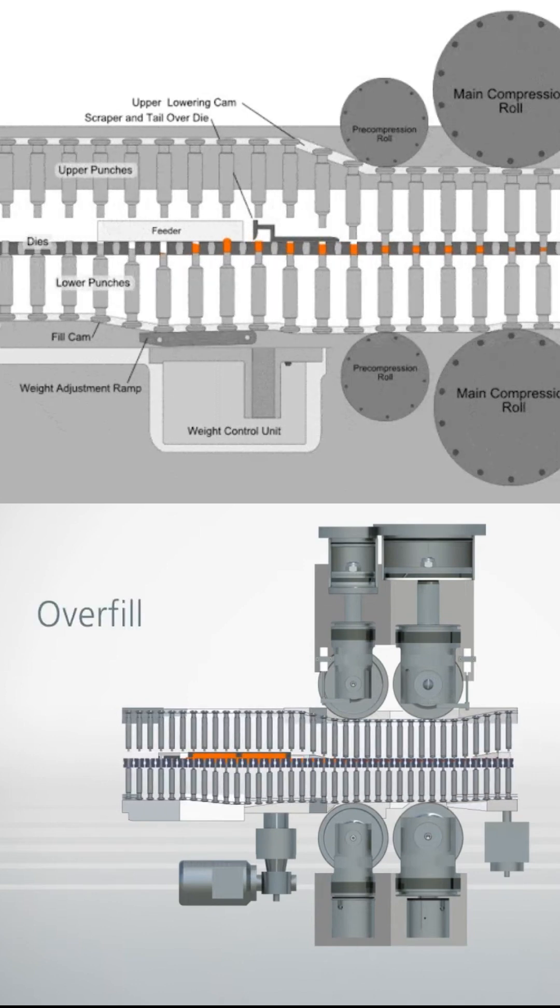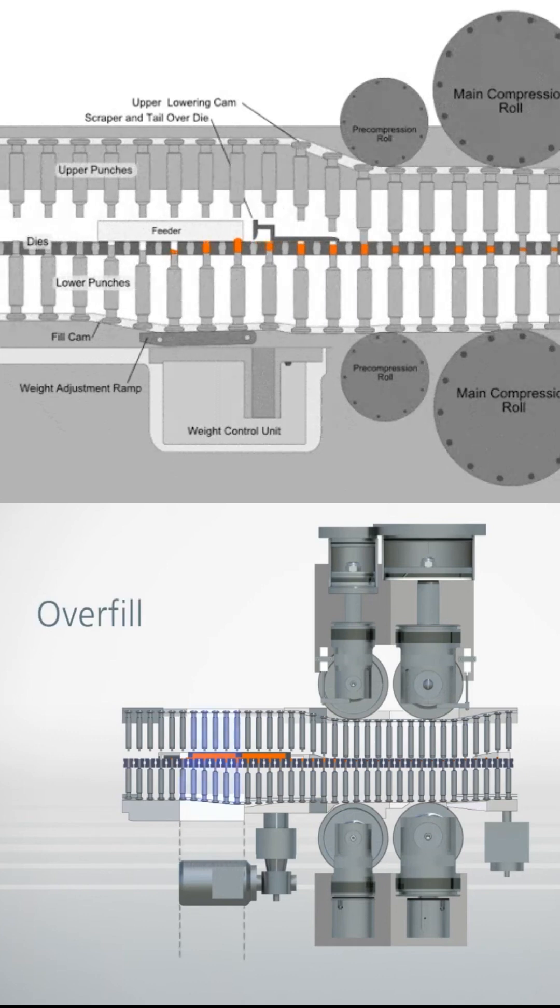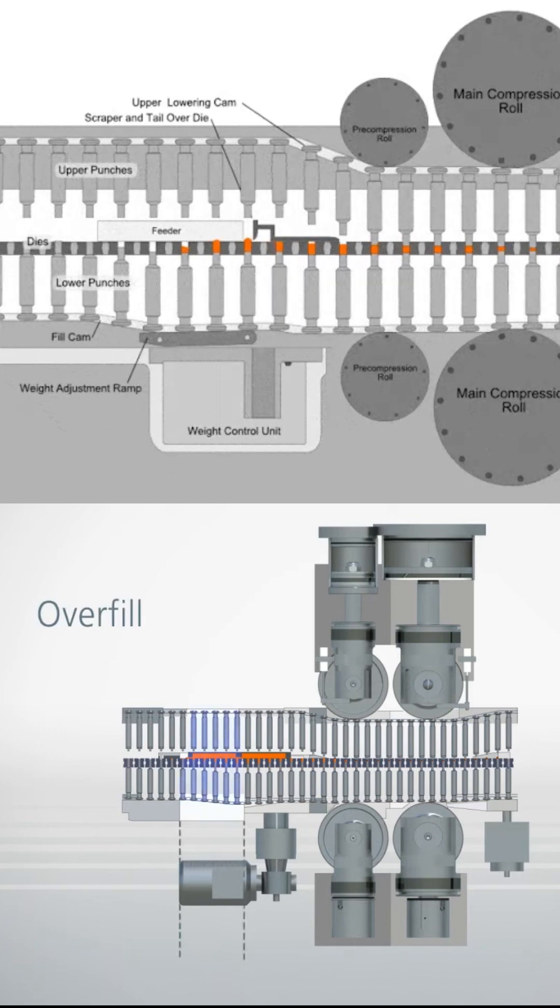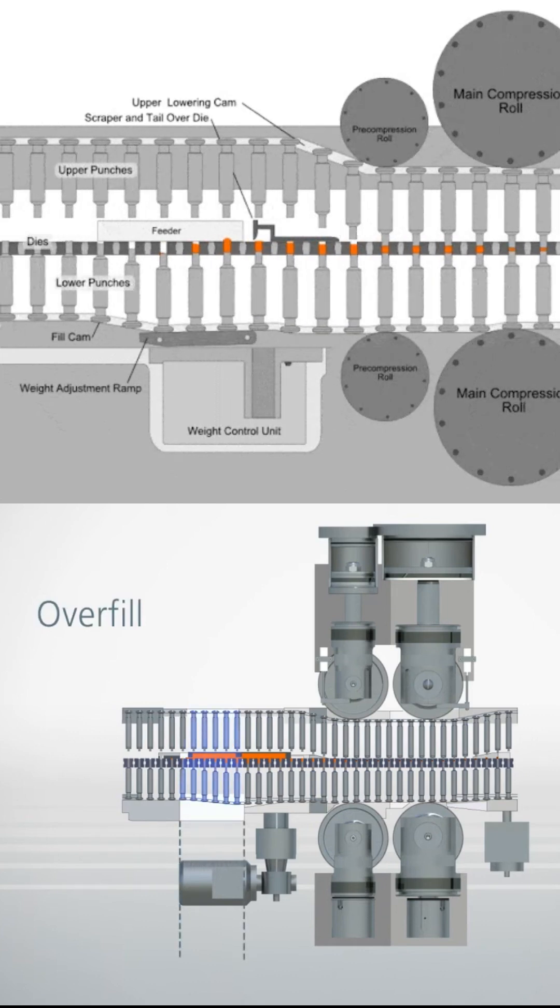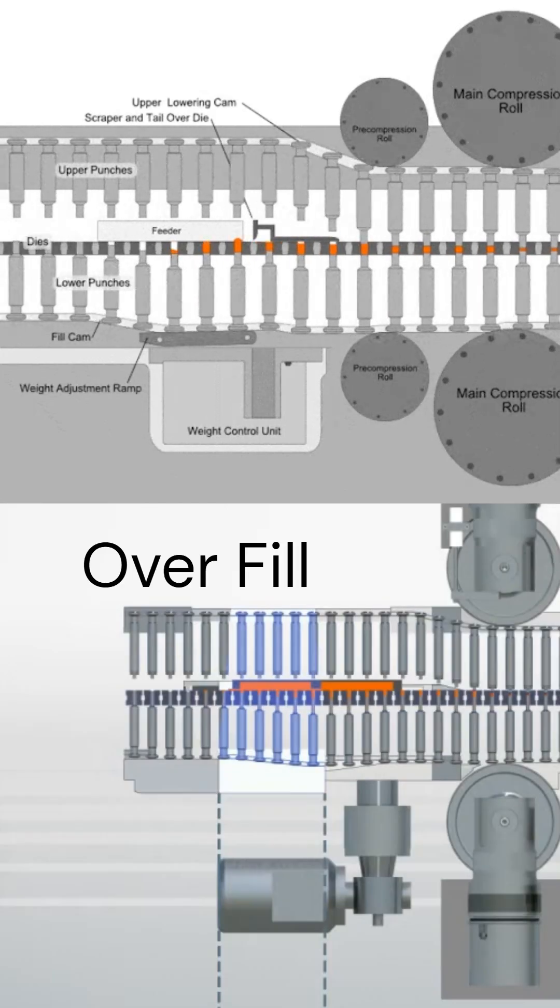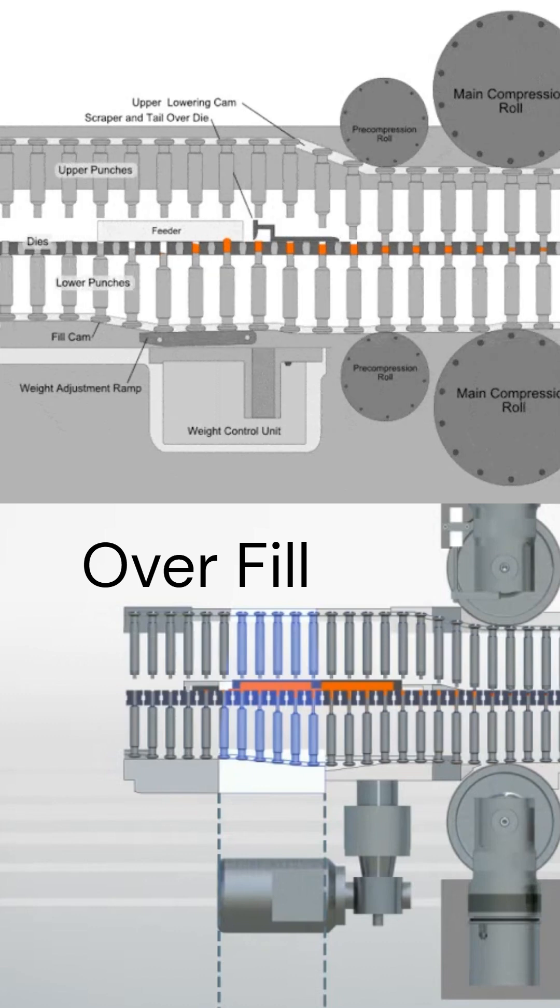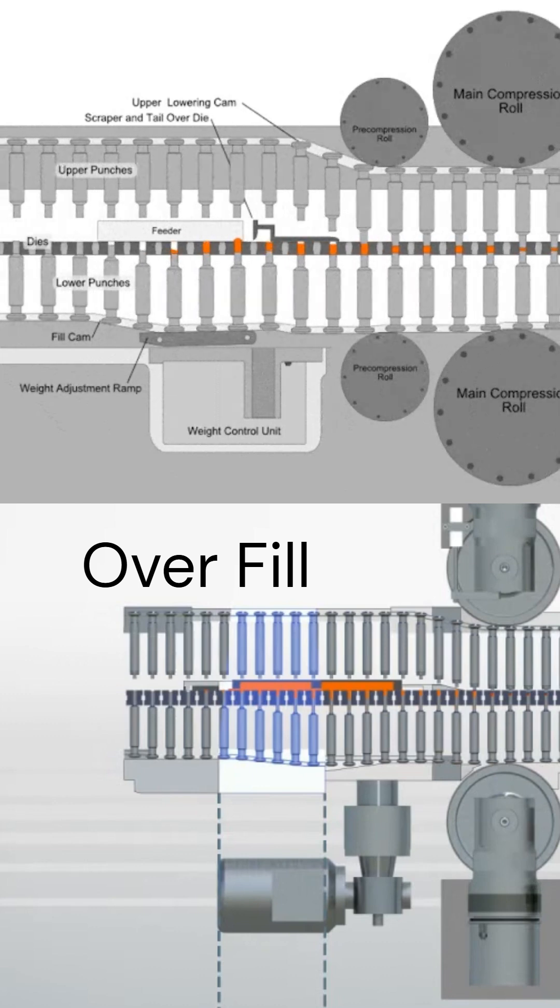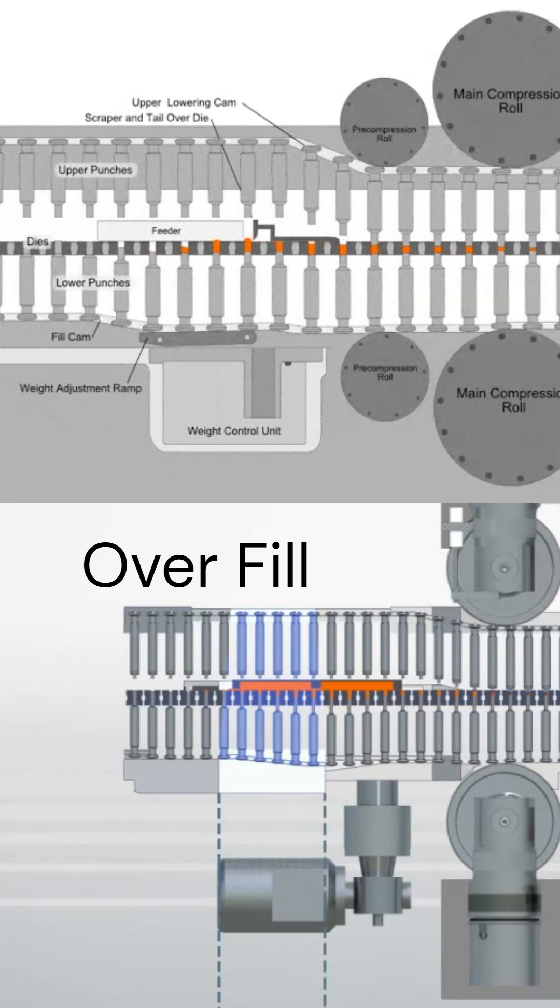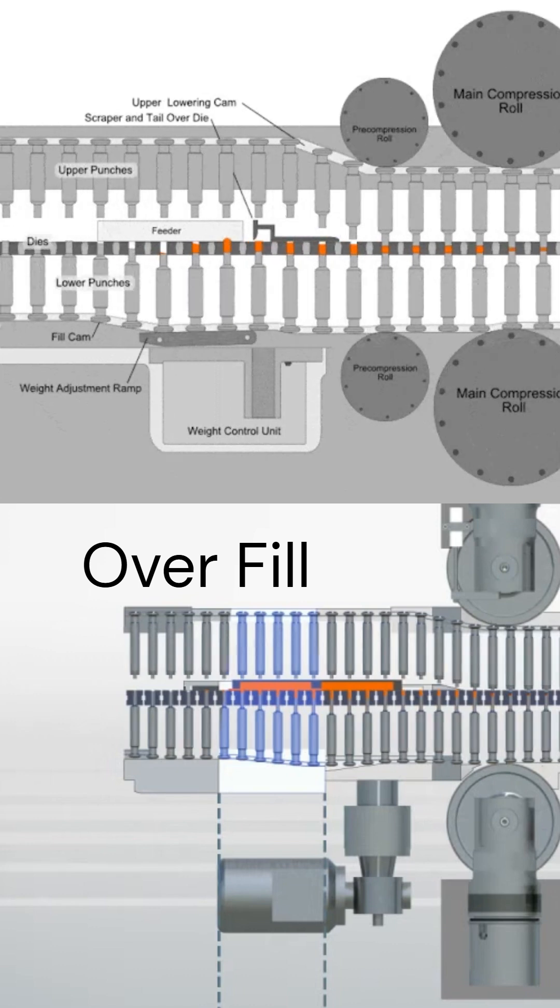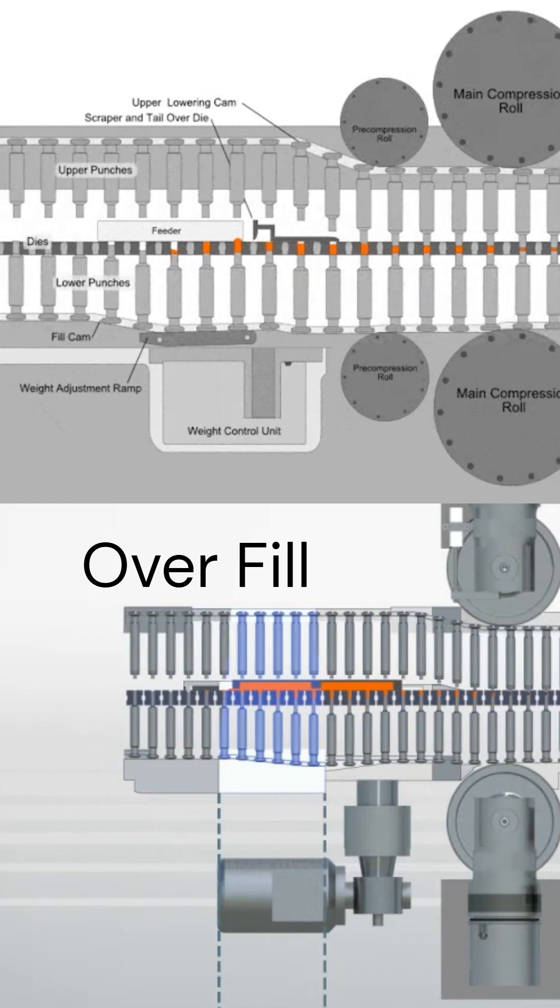At the overfill station, a fixed cam is installed below the first chamber of the double paddle feeder, lowering the bottom punch to a position which allows more than the required material into the die. This ensures that there is enough powder in the die. A wide variety of overfill cams can be used depending on tablet weight.